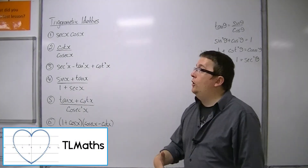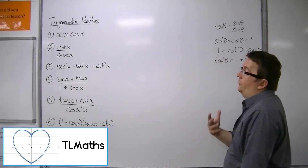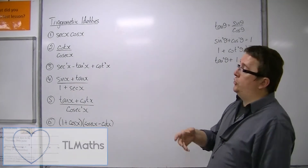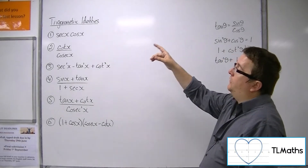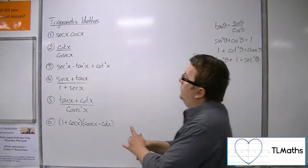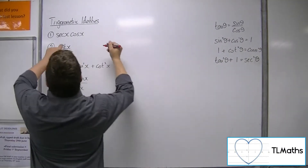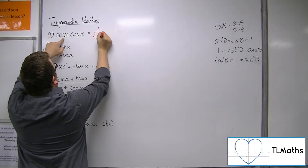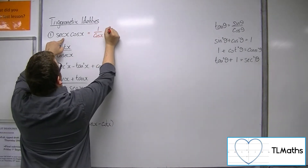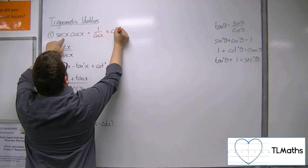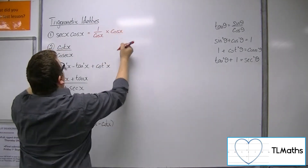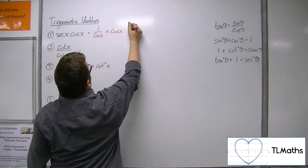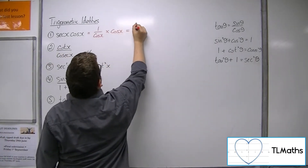In this video, what we're going to do is simplify some trigonometric expressions. We have sec x cos x. Sec we know is 1 over cos, and we're multiplying that by cosine, so 1 over cosine times cosine is just going to be 1.